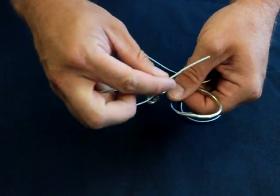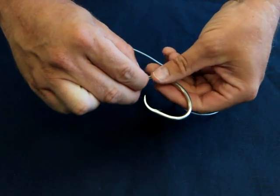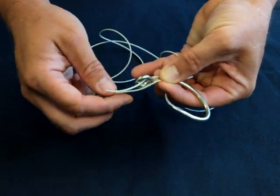Then you're going to take the other tag end and lay it parallel to the shank of the hook and parallel with your other tag end.